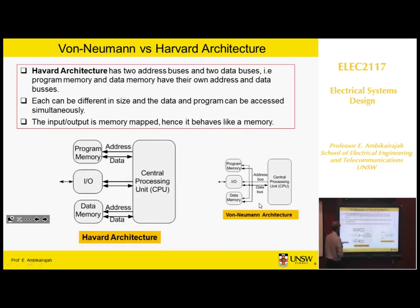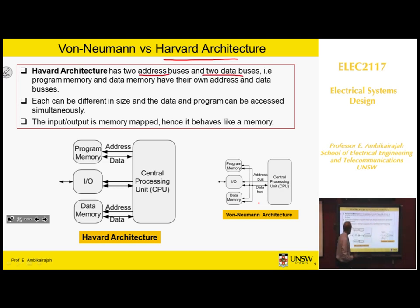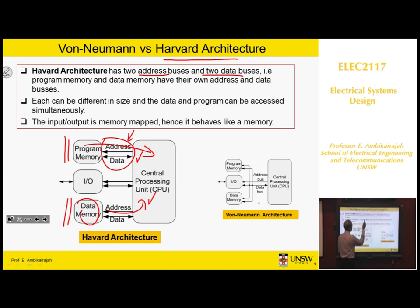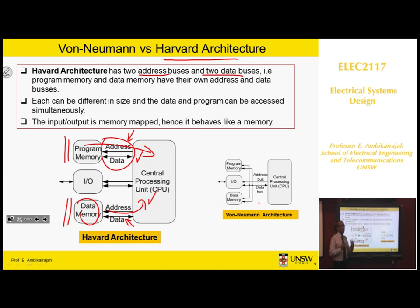The next structure is Harvard architecture, which has two address buses and two data buses. Whenever it needs the program memory, it uses one set of address and data lines; whenever it needs data memory, it uses another set. These can operate in parallel, so it is faster and more efficient. These memories can also be different sizes — for example, one could be 16-bit addressing and the other 8-bit addressing. Data is normally 8-bit, 16-bit, 32-bit, or 64-bit.